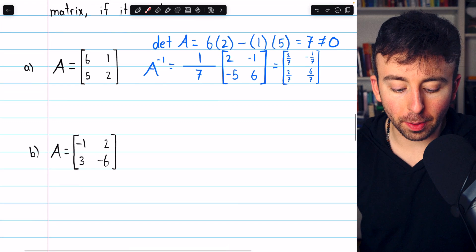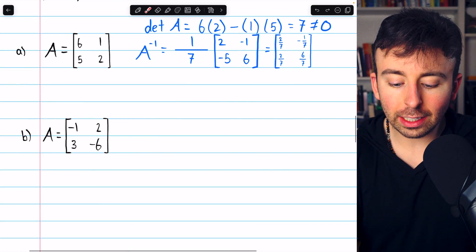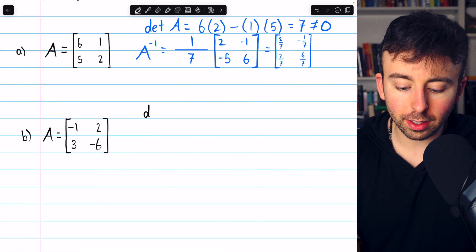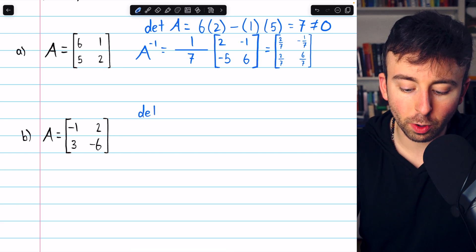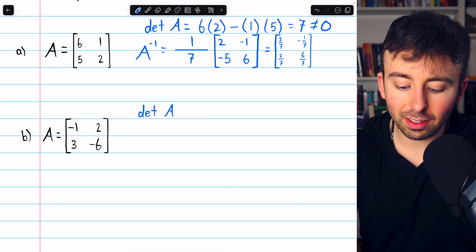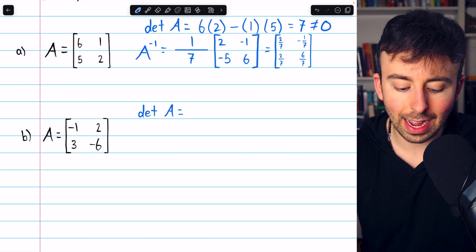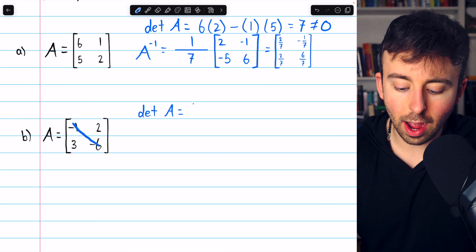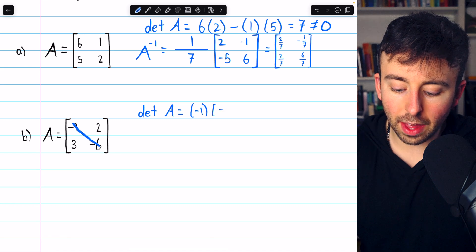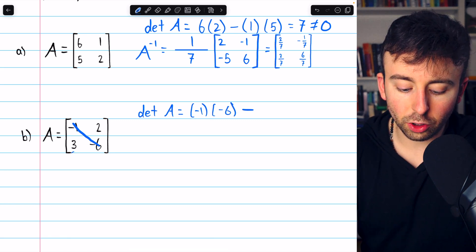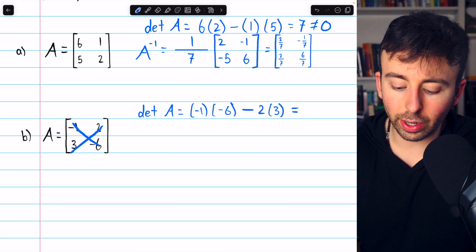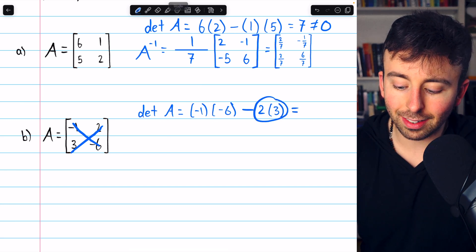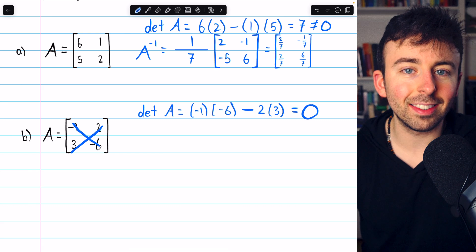Let's move on then to problem B. Here is our matrix. Let's begin by finding the determinant to see if we can even calculate an inverse of this matrix. The determinant, again, is going to be the difference of the products of the diagonals. So negative 1 times negative 6, and then we have to subtract 2 times 3. This is going to be positive 6 minus 6, which is 0.